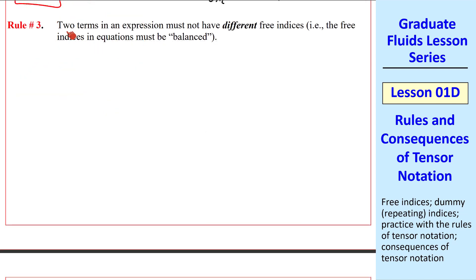Rule number 3 says that two terms in an expression must not have different free indices. In other words, the free indices must be balanced. Let's take, for example, this expression where u is a vector, b is a vector, e is a second order tensor, and a is a vector. This term has one free index, i, and one dummy index, k. So we would sum up over the k's and be left with three terms. Similarly, this term has one free index, i.